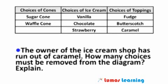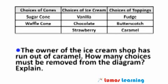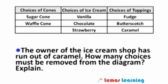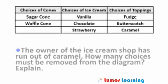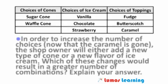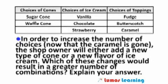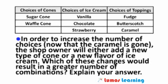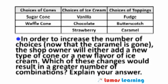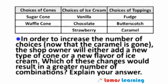The owner of the ice cream shop has run out of caramel. How many choices must be removed from the diagram? Explain. In order to increase the number of choices now that the caramel is gone, the shop owner will either add a new type of cone or a new flavor of ice cream. Which of these changes would result in a greater number of combinations? Explain your answer.